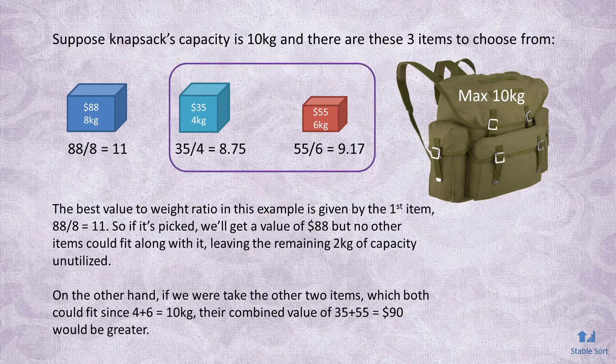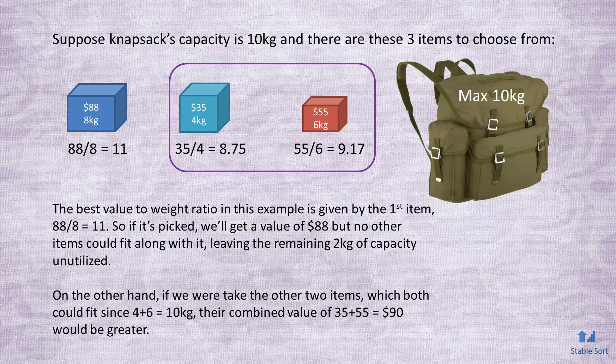On the other hand, if we were to take the other two items, both of which could fit, their combined value of 90 would be greater. So picking the optimal combination of items to maximize the total value is the challenge here.